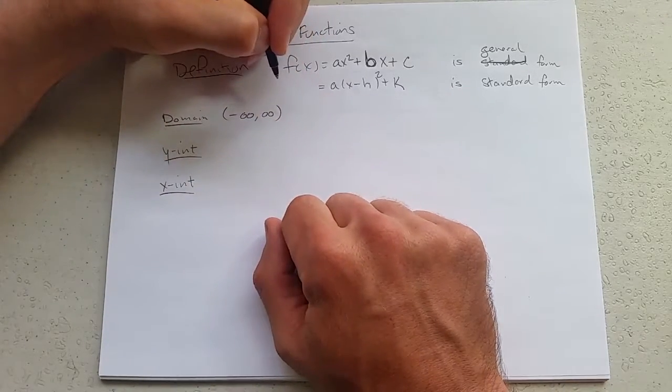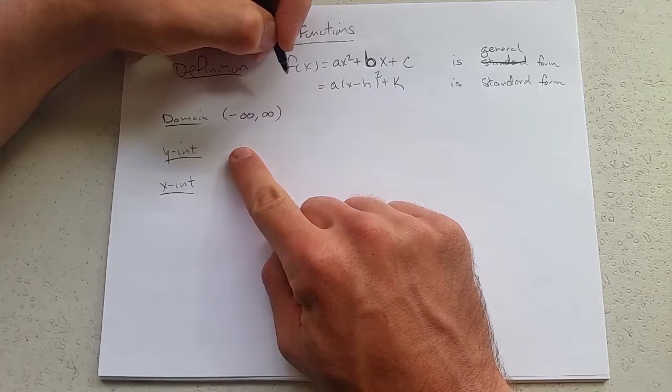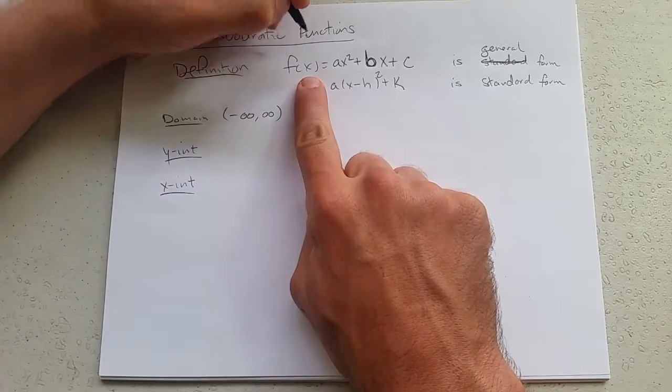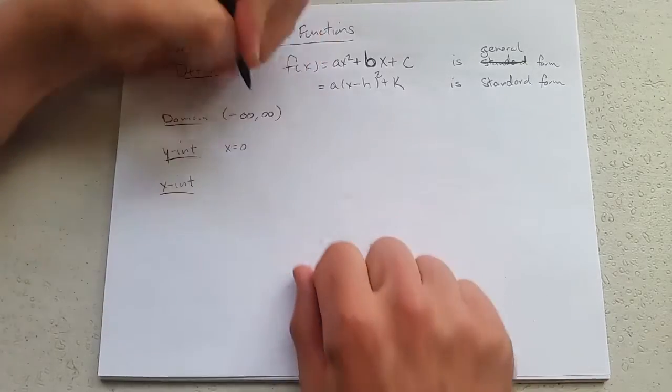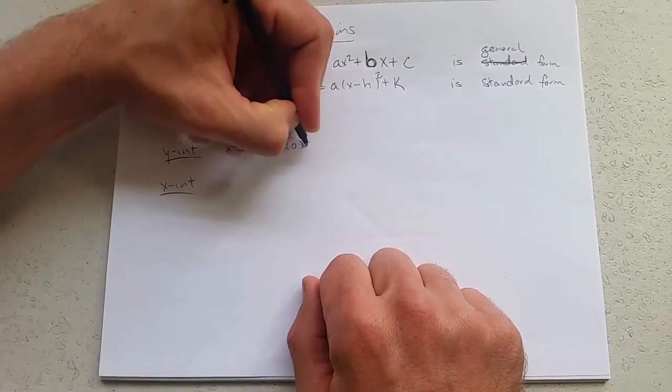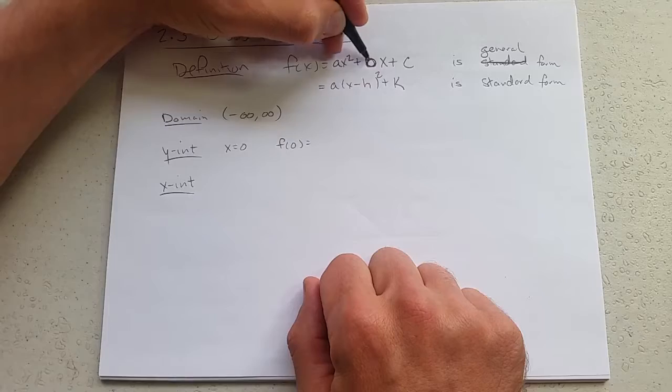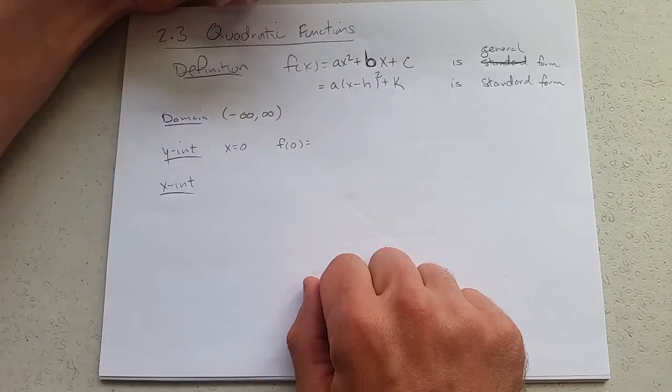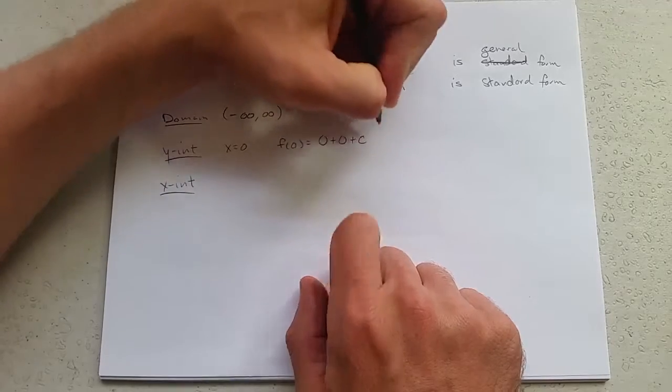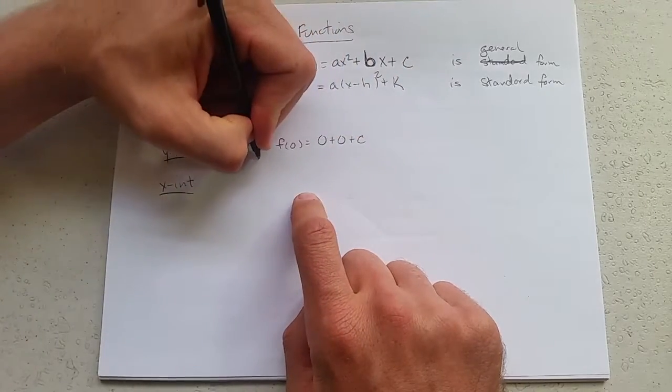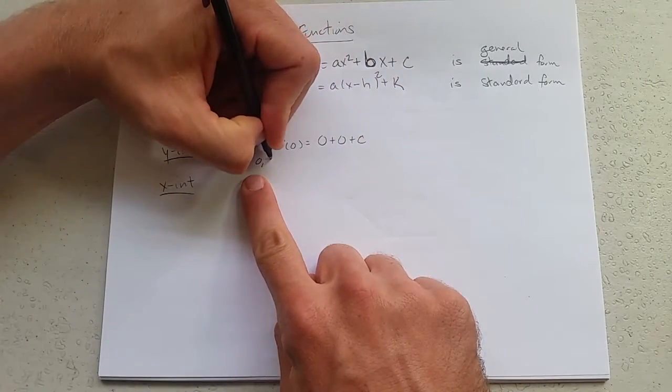Y-intercept: How do you get the y-intercept? You plug in zero. So you set x equals to zero. What is f of zero? We're going to use this form because it's very nice for plugging in zero. Zero plus zero plus c. What is our y-intercept written as a point? x equals zero, y equals c. We have y-intercept is (0, c).